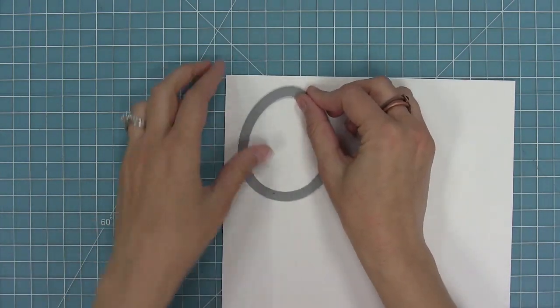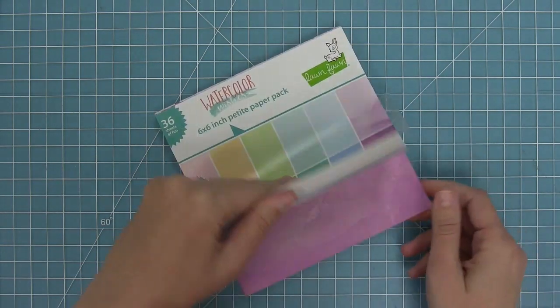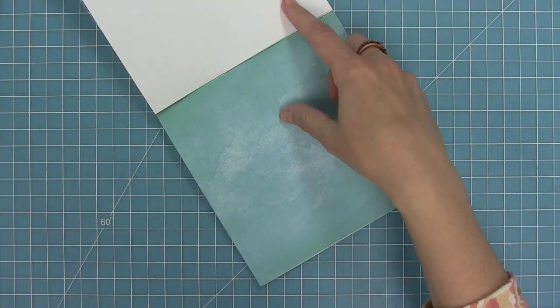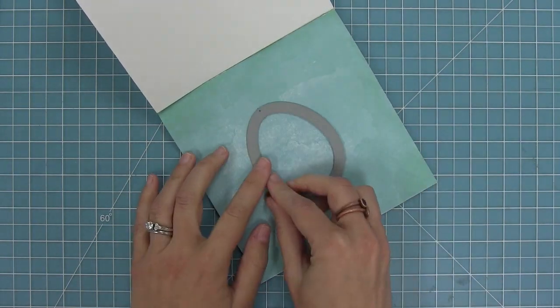I'm using an outside in easter egg stackable and I'm going to die cut some white cardstock and then I'm going to use the easter egg frames to die cut that same color of watercolor wishes paper as the card base so that it all kind of coordinates nicely together.